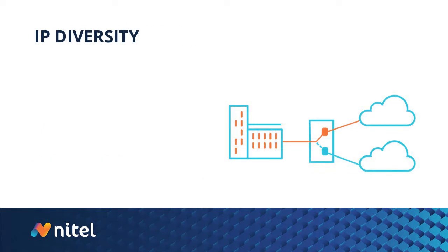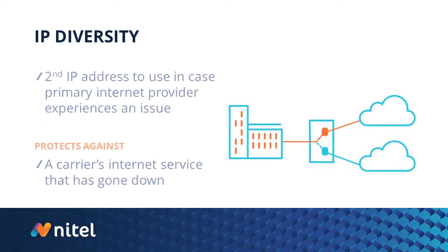Fourth, we have IP diversity. In this instance, a customer's site would receive public IP addresses from blocks belonging to different providers. This would give a customer a second routing option if an internet service was to go down on a circuit.